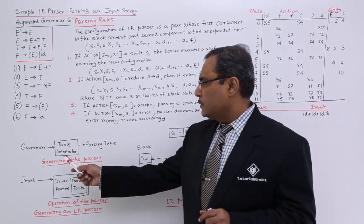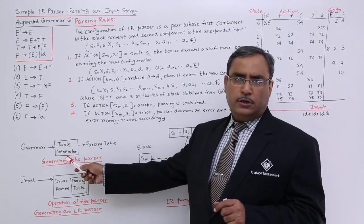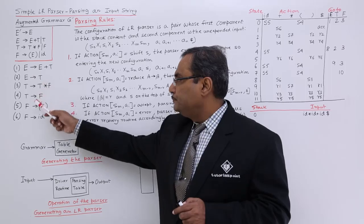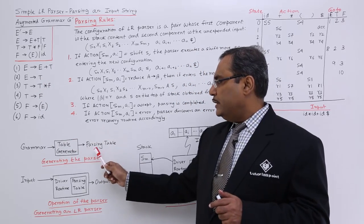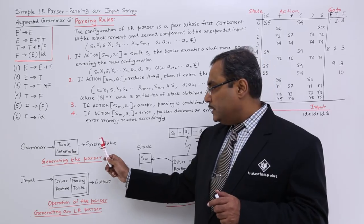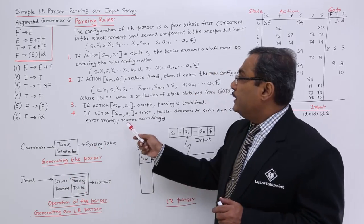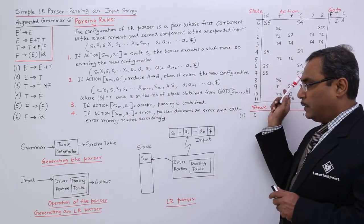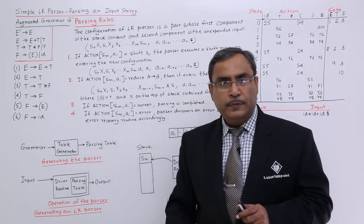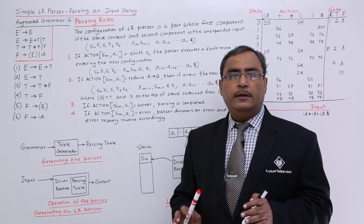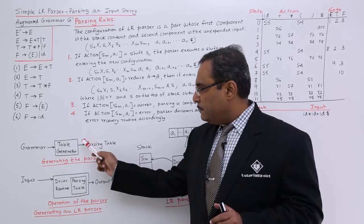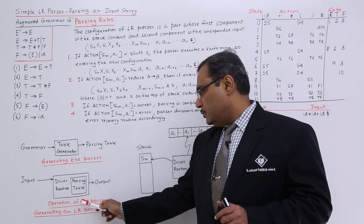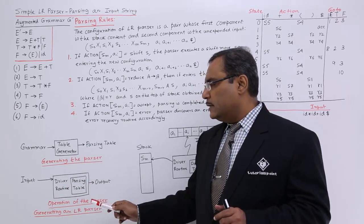This is a table generator logic — a parsing table generator logic — that takes the grammar as input and produces the respective parsing table. The generated parsing table and the driver routine, which contains the rules of parsing, together take one string as input and produce the output of whether the string has been accepted or rejected. This is the basic model for generating and operating the SLR parser.